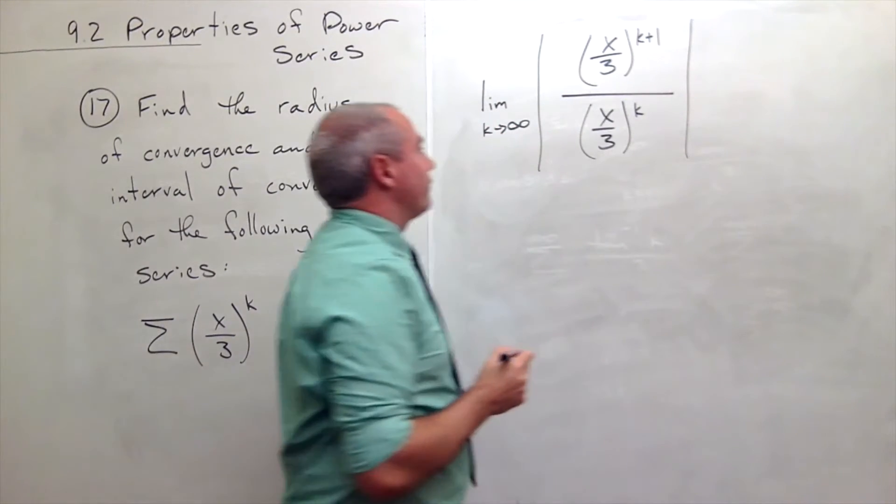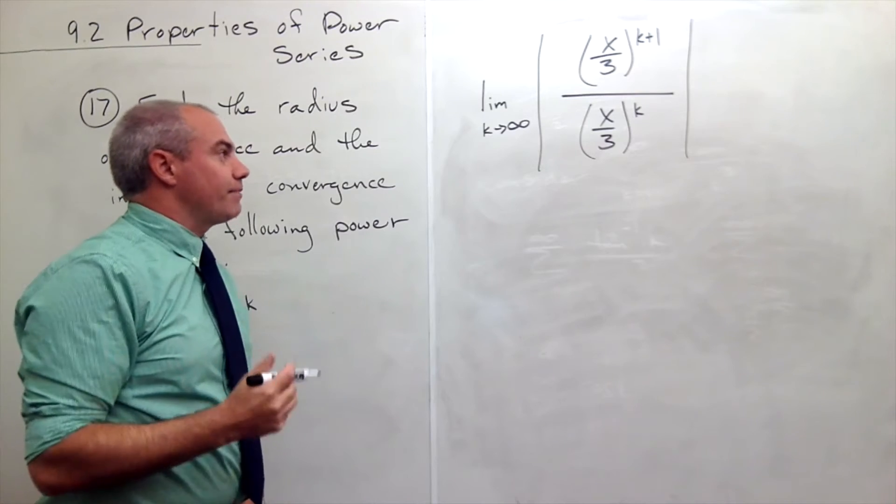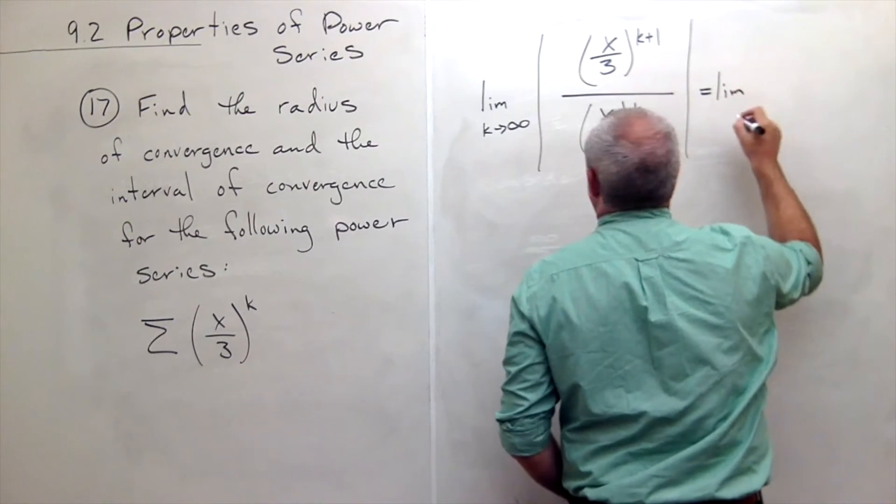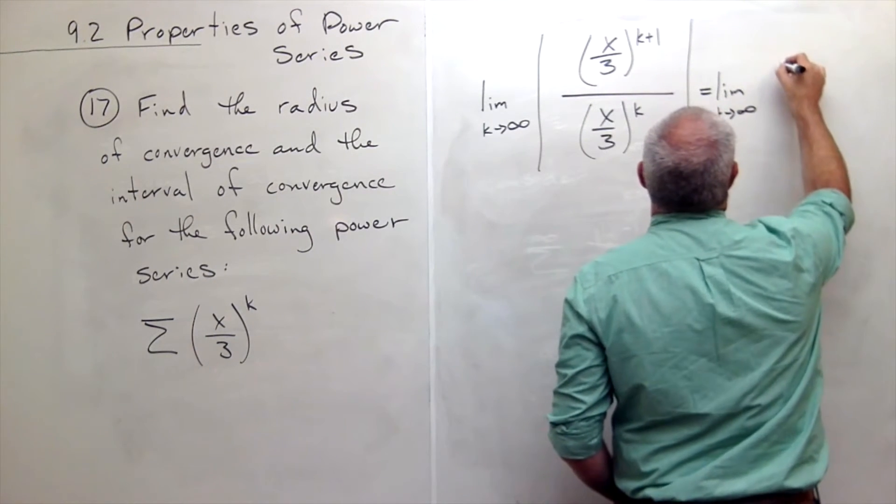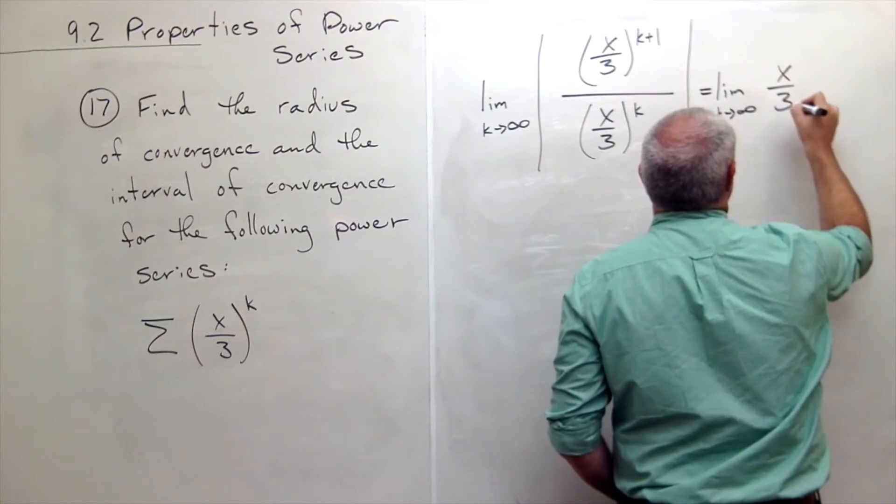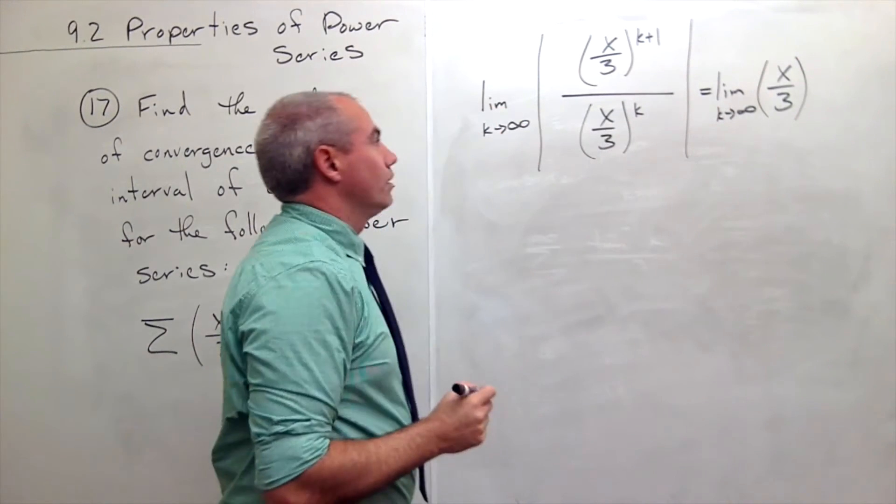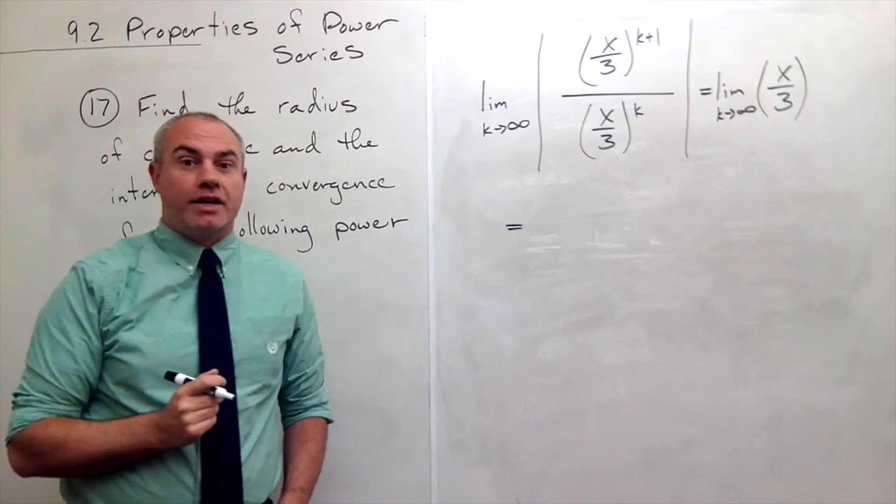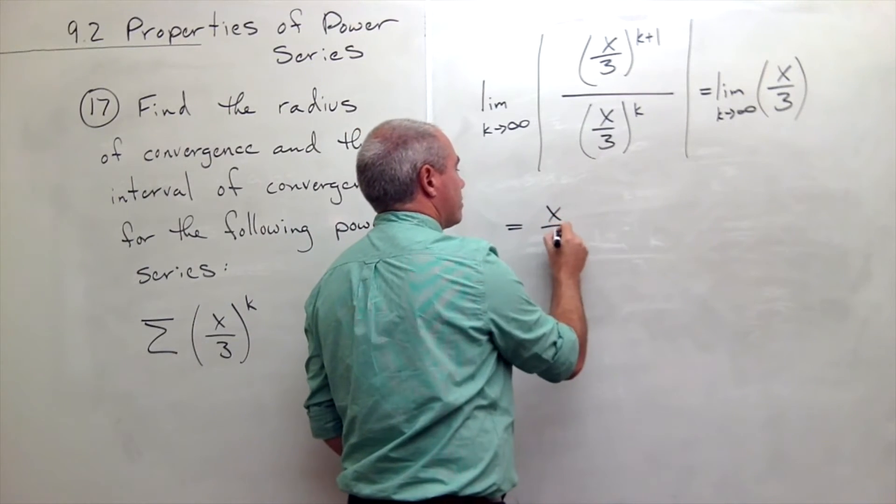This is pretty straightforward. If I have something to the (k+1) divided by something to the kth power, I'm just left with the limit as k goes to infinity of (x/3) to the first power. Which of course, there are no k's in x/3, so the limit as k goes to infinity is just x/3.